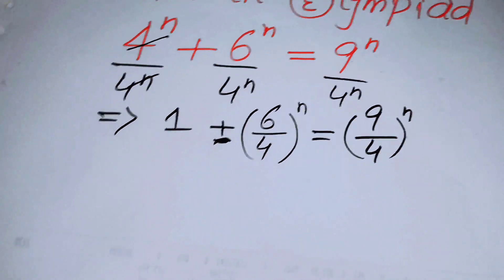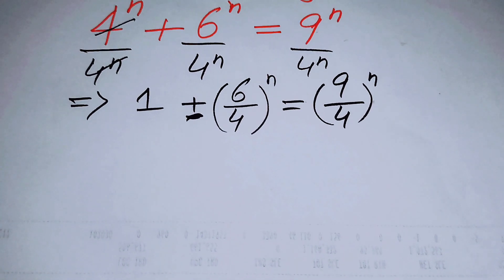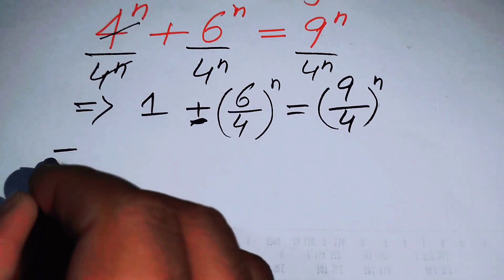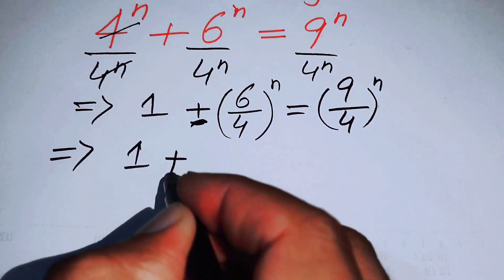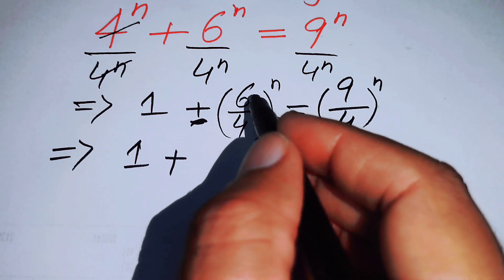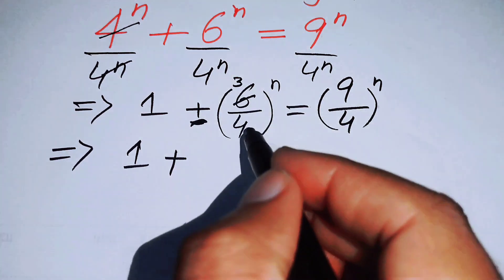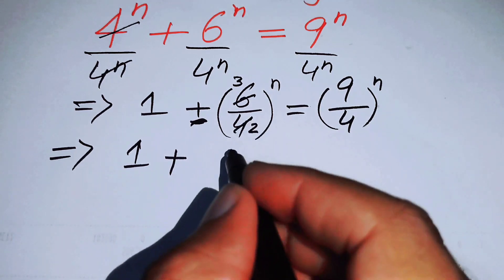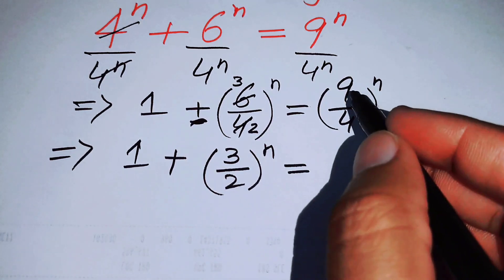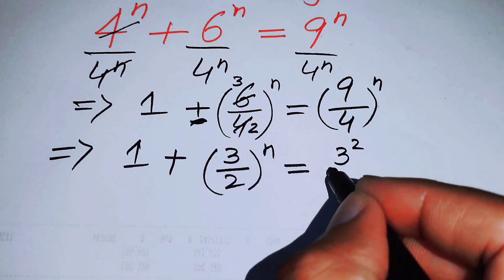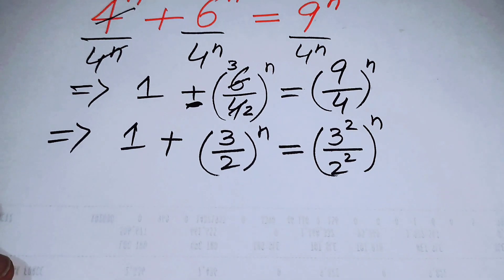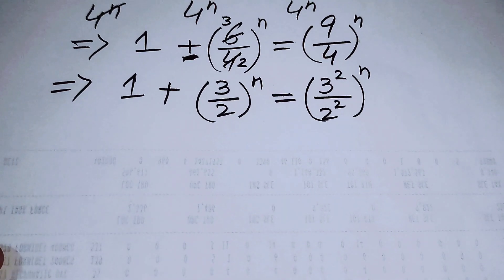Now we will convert this exponential equation into quadratic form. First, we simplify: 6 over 4 reduces to 3 over 2, since 3 twos are 6 and 2 twos are 4. So we have 1 plus (3/2)^n equals 9 over 4 to the power of n, and we rewrite 9 as 3 squared and 4 as 2 squared.